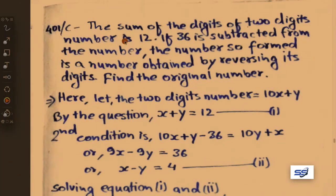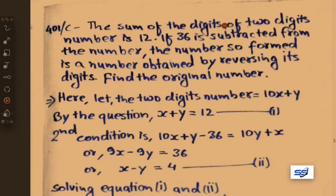Next problem: the sum of the digits of a two-digit number is 12. If 36 is subtracted from the number, the number so formed is obtained by reversing its digits. Find the original number. Let the two-digit number be 10x plus y.